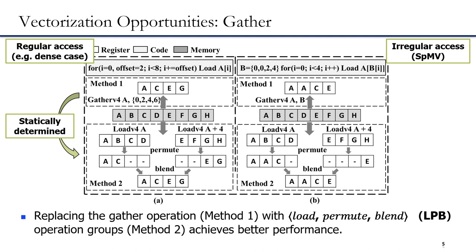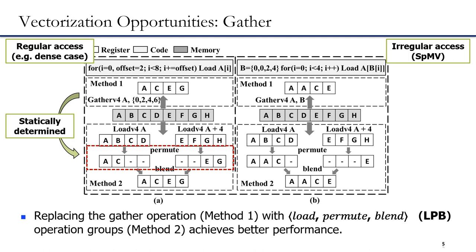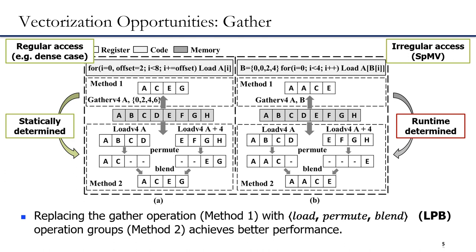For regular programs, as shown in figure A, compilers can automatically perform vectorization optimization through static analysis. In detail, the gather operation accesses elements 0, 2, 4, 6 of the data, resulting in loading A, C, E, G. With load-permute-planned operation groups, we first load data with two vector load instructions resulting in A, B, C, D and E, F, G, H respectively. Then we perform permute and blend operations to place data in the proper locations. Whereas for irregular access, as shown in figure B, since memory access patterns can only be recognized during runtime, compilers generate inefficient code using gather operations rather than optimized load-permute-planned operation groups.